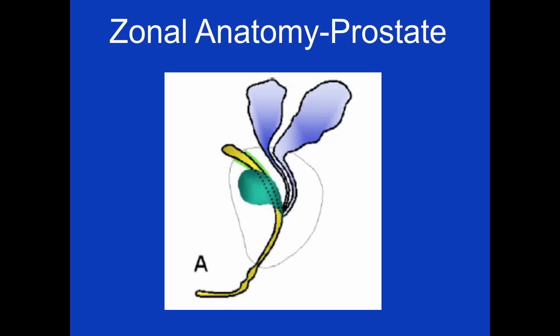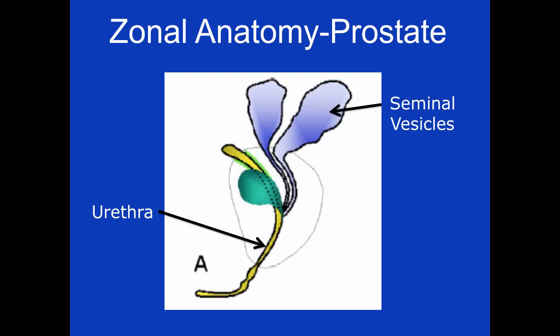The prostate gland extends from the bladder base to the urogenital diaphragm like an inverted pyramid, and envelops the prostatic urethra, which in this image is shown in yellow. In blue, you see the seminal vesicles and the ejaculatory ducts extending from the seminal vesicles to the verumontanum, where the ejaculatory ducts empty into the urethra. The periurethral glands are the small area here extending from the bladder base down to the verumontanum.